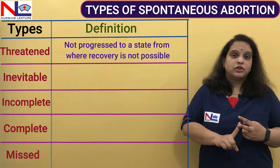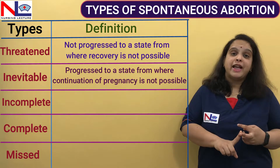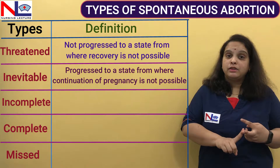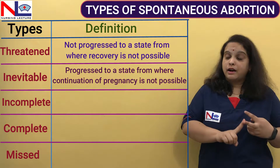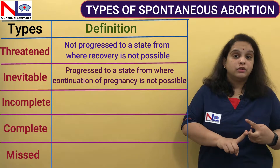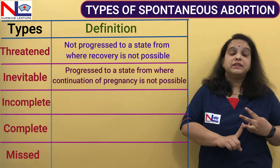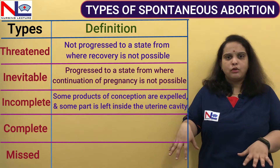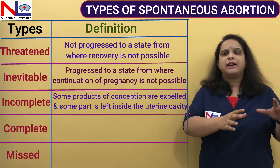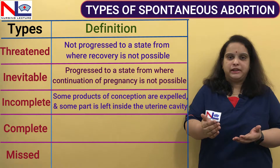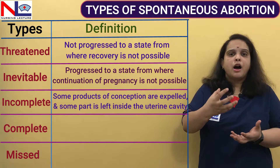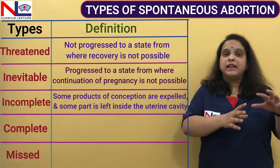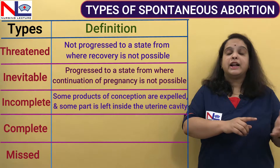Second is inevitable abortion — it is the type where it is unavoidable. It cannot be controlled; the progress of abortion has started and it cannot be reversed. The third type is incomplete, where — as the name suggests — partially the product of conception is out from the cavity and partly it remains in the cavity. The abortion process started but is not finished.